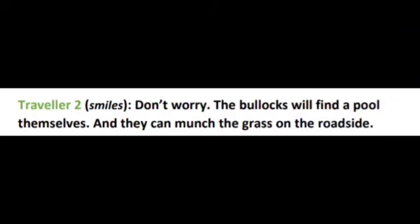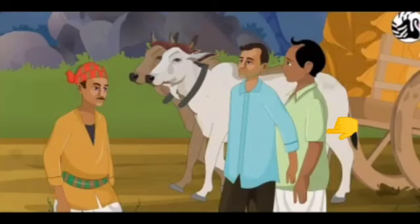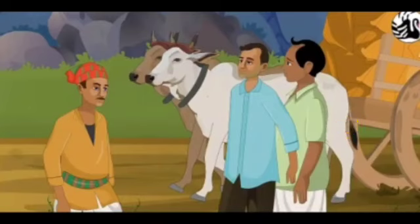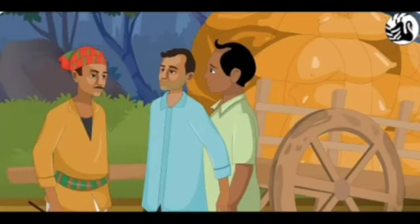Traveler 2 smiles and says, 'Don't worry, the bullocks will find a pool themselves and they can munch the grass on the roadside.' Munch means eat noisily. The cart driver unties the bullocks from the cart and the animals wander off looking for food and water. Wander off means walk slowly around the place without exactly knowing where to go.